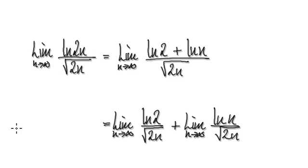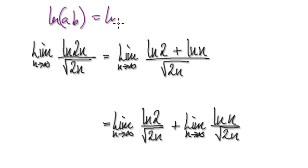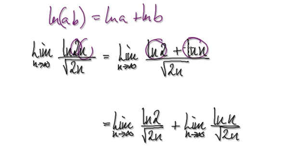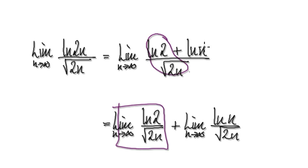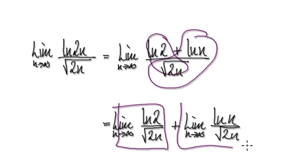To do this, break this up. Remember, the natural log of a times b is the same as natural log of a plus natural log of b. So break this up as natural log of 2 plus natural log of n. Now you can break this up as one fraction, and then break this up as another fraction.